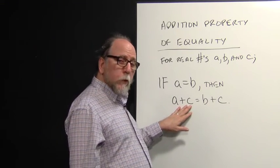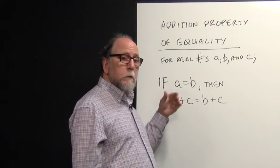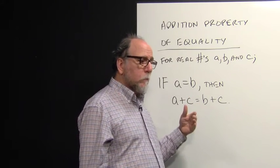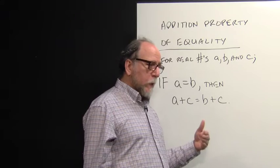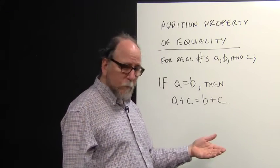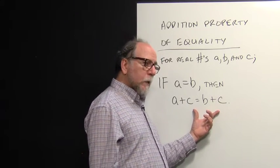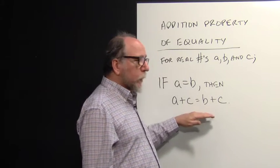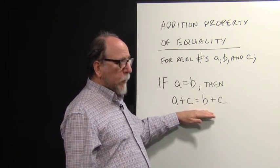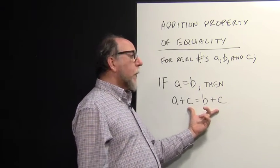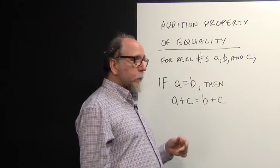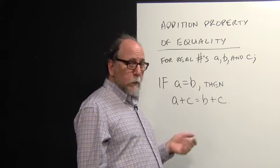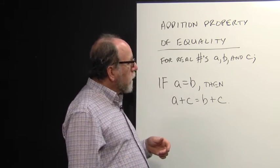This works for subtraction as well, of course, because addition and subtraction are really the same thing. Subtraction is the addition of a negative number. So when we think of it like that, adding a negative number, we can do that as well. And usually we take something more complicated like this and subtract the c's away to get a equals b, a simpler equivalent equation.